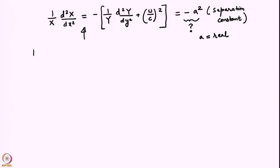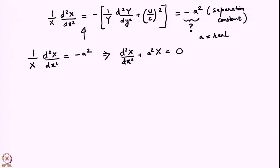Equating the first part to minus a-squared gives an equation for X. This is just a linear constant-coefficient equation, easy to solve: X(x) = A·cos(ax) + B·sin(ax). In general, these constants A and B will be complex constants because our eigenfunctions are in general complex. We will take that into account at the end when we write the answer in terms of real quantities.